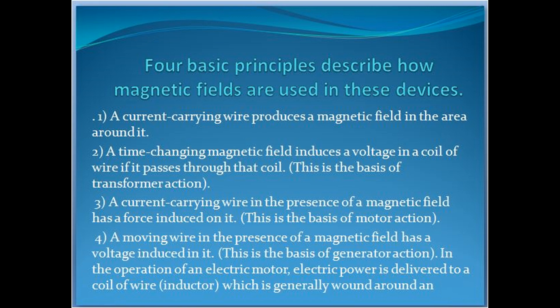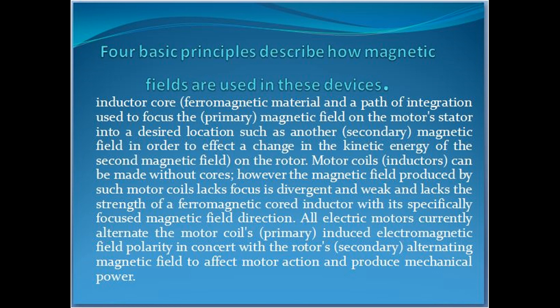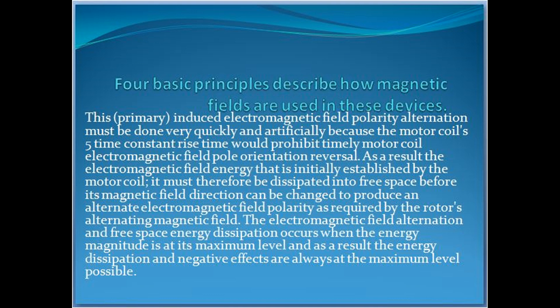In the operation of an electric motor, electric power is delivered to a coil of wire (inductor), which is generally wound around an inductor core of ferromagnetic material — a path of integration used to focus the primary magnetic field on the motor's stator into a desired location such as another secondary magnetic field, in order to affect a change in the kinetic energy of the second magnetic field on the rotor. Motor coils (inductors) can be made without cores; however, the magnetic field produced by such motor coils lacks focus, is divergent and weak, and lacks the strength of a ferromagnetic core inductor with its specifically focused magnetic field direction. All electric motors currently alternate the motor coil's primary induced electromagnetic field polarity in concert with the rotor's secondary alternating magnetic field to affect motor action and produce mechanical power.